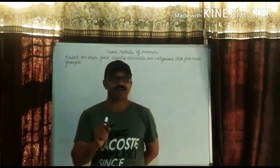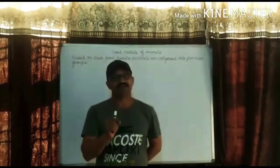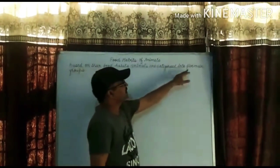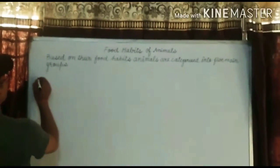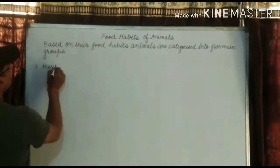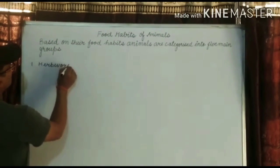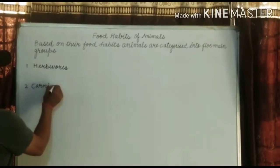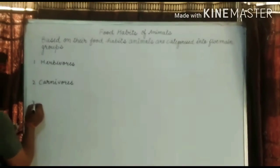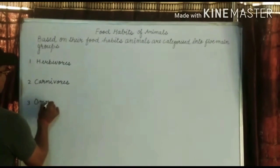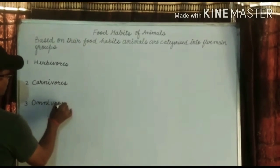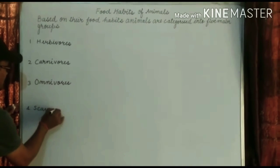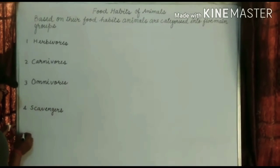Animals eat different types of food. Some animals eat grass while others eat flesh. Based on their food habits, animals are categorized into five main groups: herbivorous, carnivorous, omnivorous, scavengers, and parasites.